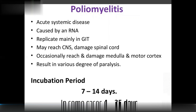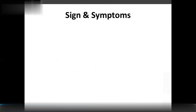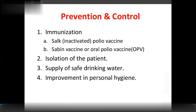Polio affects children and babies, causing paralysis. Incubation period is 7 to 14 days; in some cases 3 to 35 days. The causative organisms are poliovirus type 1, type 2, and type 3. Mode of transmission is through the fecal-oral route or droplet infection from contaminated fingers of the patient.